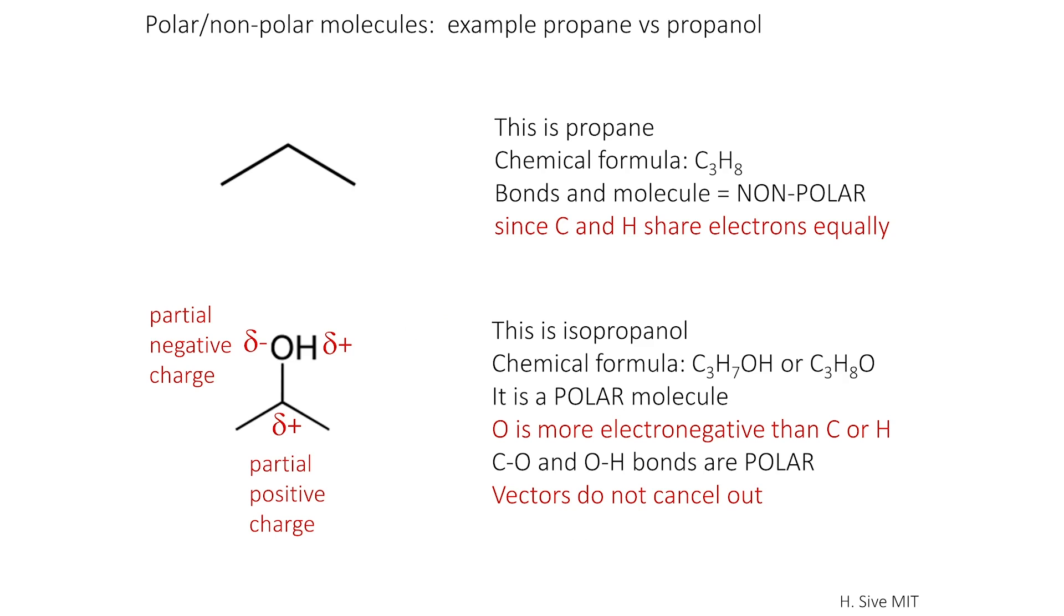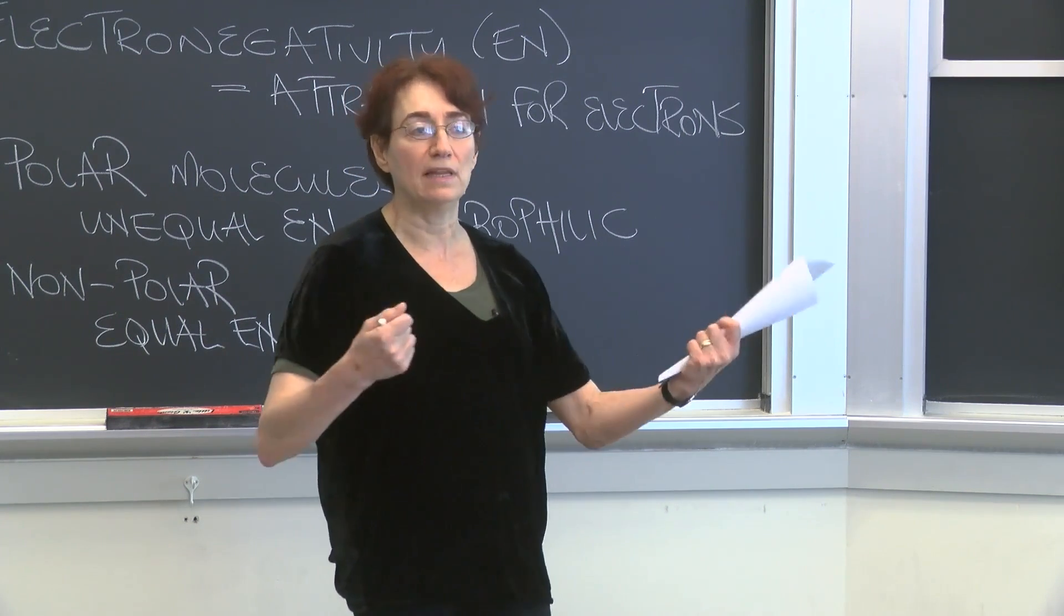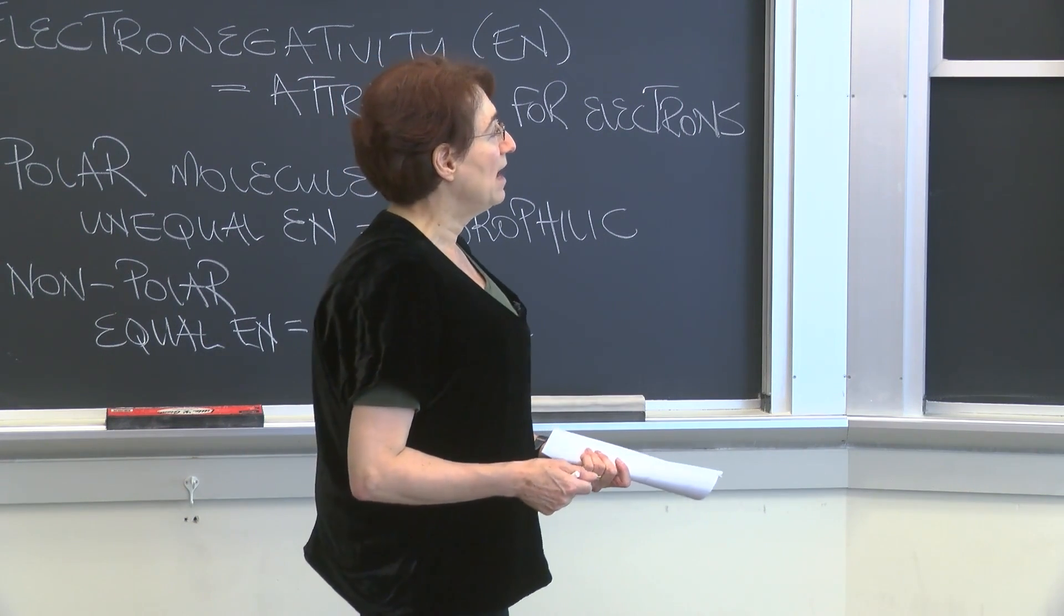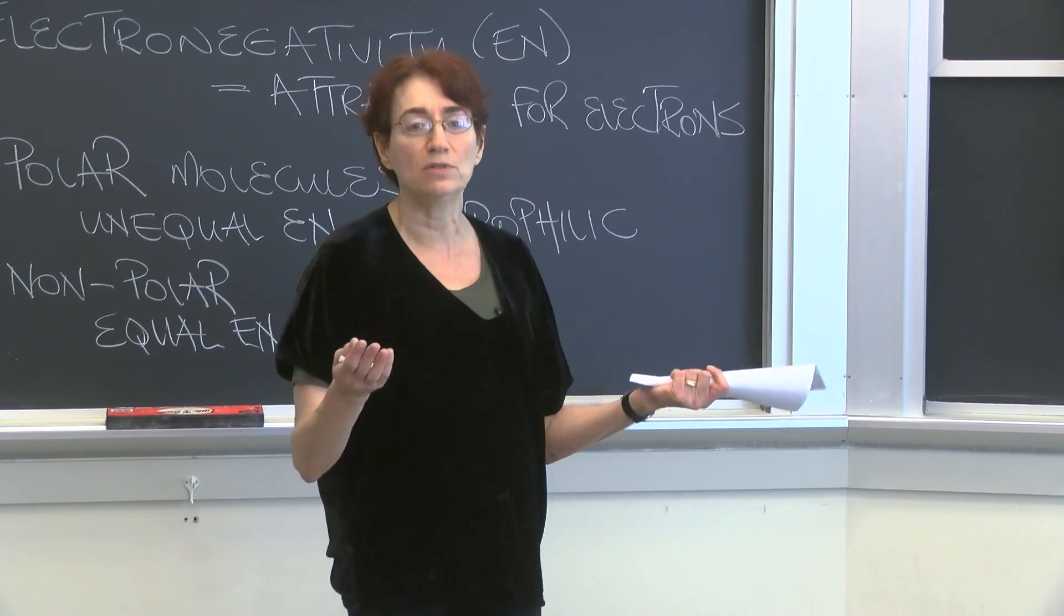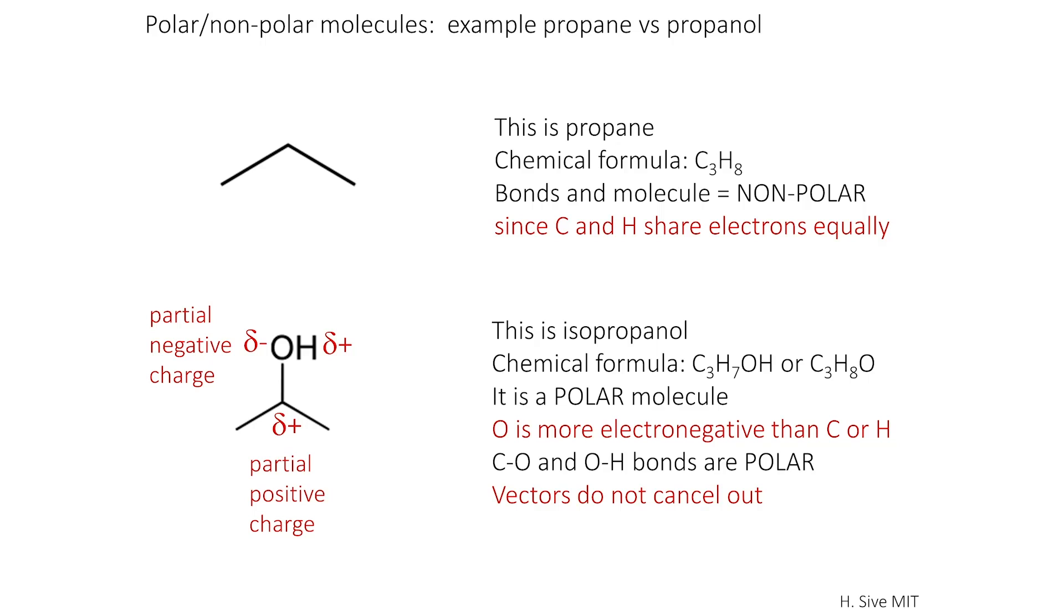Here are two examples. One is polar and one is not polar. The top example is propane, which has the chemical formula, as you can see, C3H8. It is just carbons and hydrogens, neither of which are particularly electronegative atoms. Neither have a tendency to pull electrons more than the other, and so the bonds and the molecule are overall nonpolar. There is an equal distribution of electrons throughout the molecule.